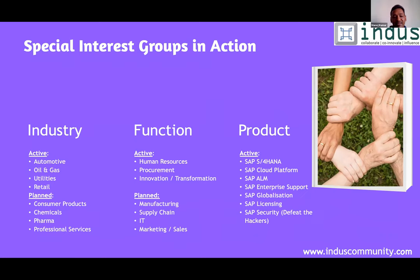Various special interest groups are in action. The oil and gas group is one of the most vibrant and energetic, with a lot of interaction among peer industries. Similarly, automotive, utilities, and retail special interest groups are active. On the functional side, there are special interest groups for HR, procurement, innovation, and digital transformation. On the product side, groups exist for S/4HANA, cloud platform, SAP ALM, SAP enterprise support, SAP globalization, SAP licensing, and SAP security.